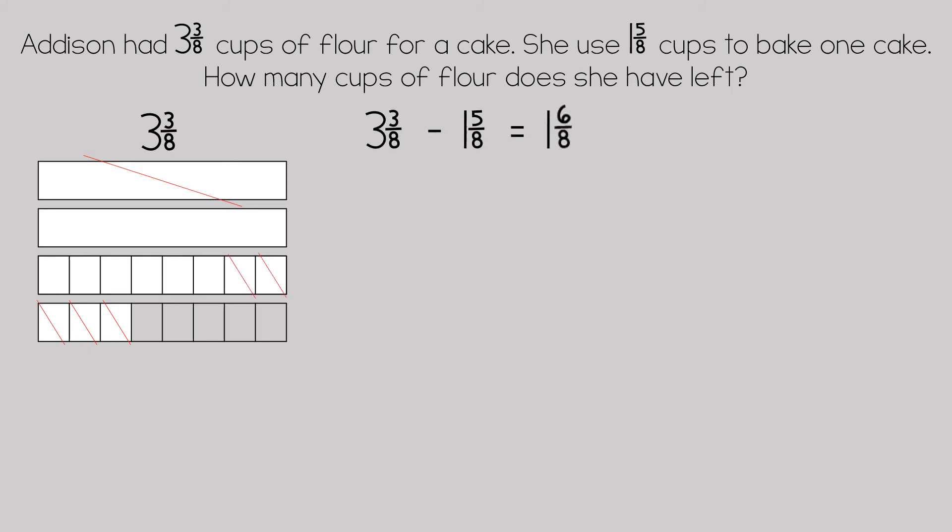So three and three-eighths minus one whole and five-eighths equals one whole and six-eighths. Mathematically, it would look like this: three and three-eighths minus one and five-eighths.